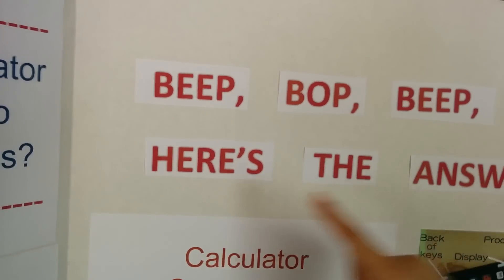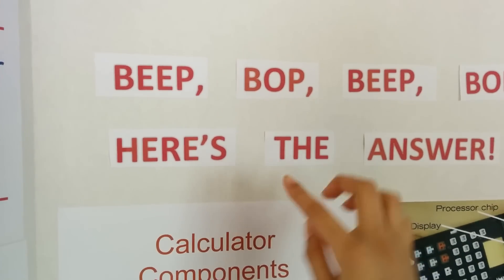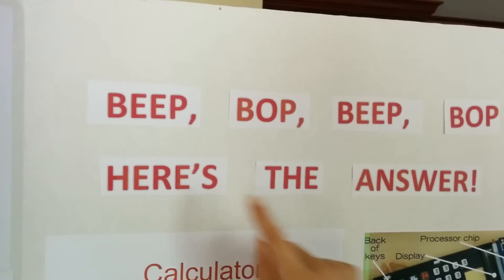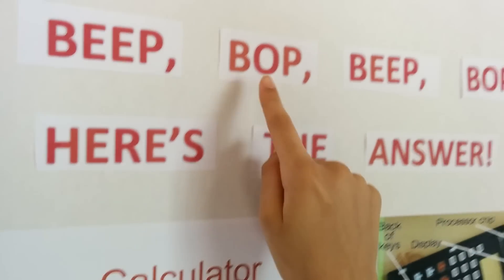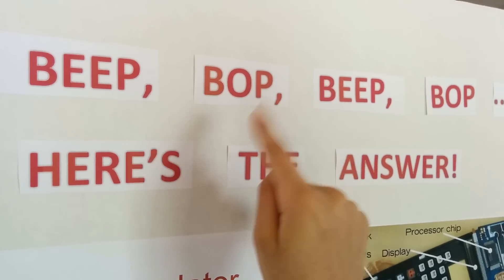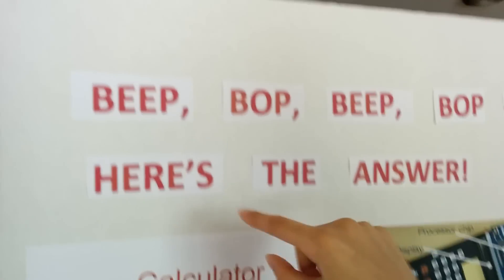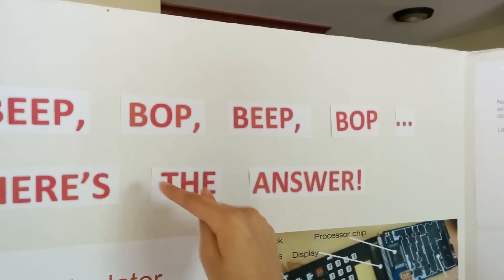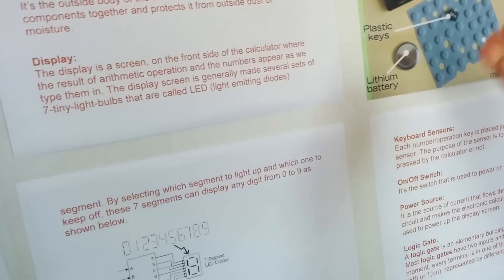Beep, bop, beep, bop, here's the answer. I put this in because beep — I kind of think of it as one — and bop — I kind of think of it as zero. So one, zero, one, zero, here's the answer. Or you could say flowing current, no flowing current, flowing current, no flowing current, here's the answer. Because binary numbers are the thing mainly used inside calculators.